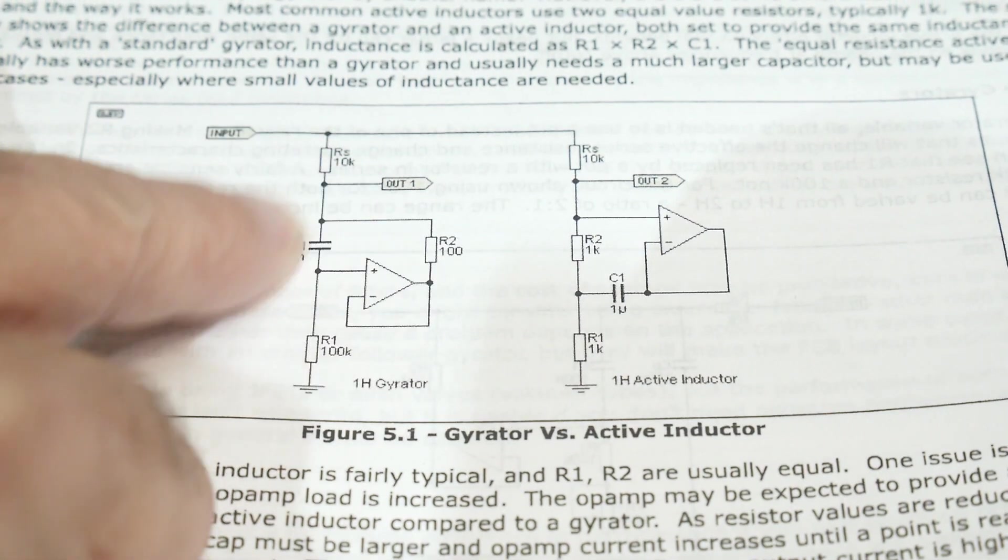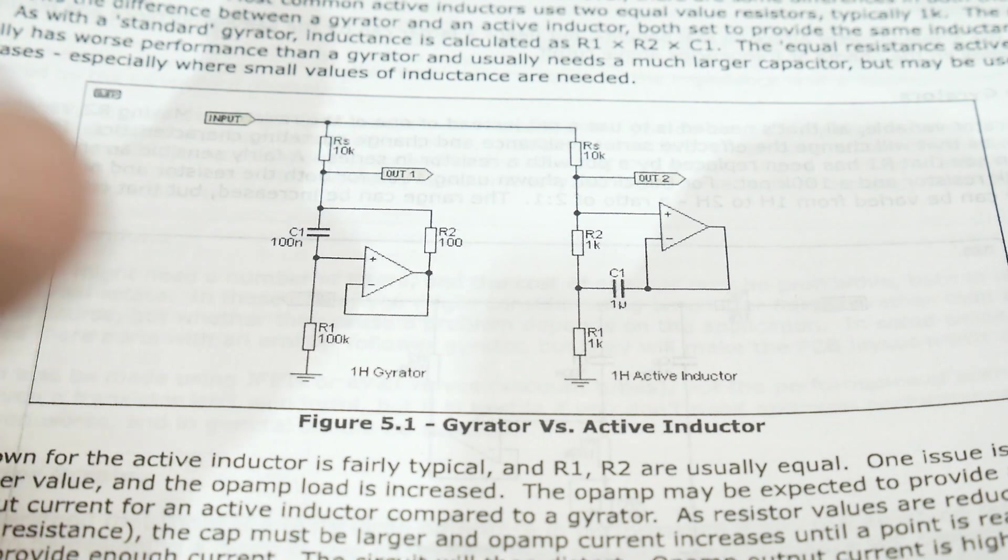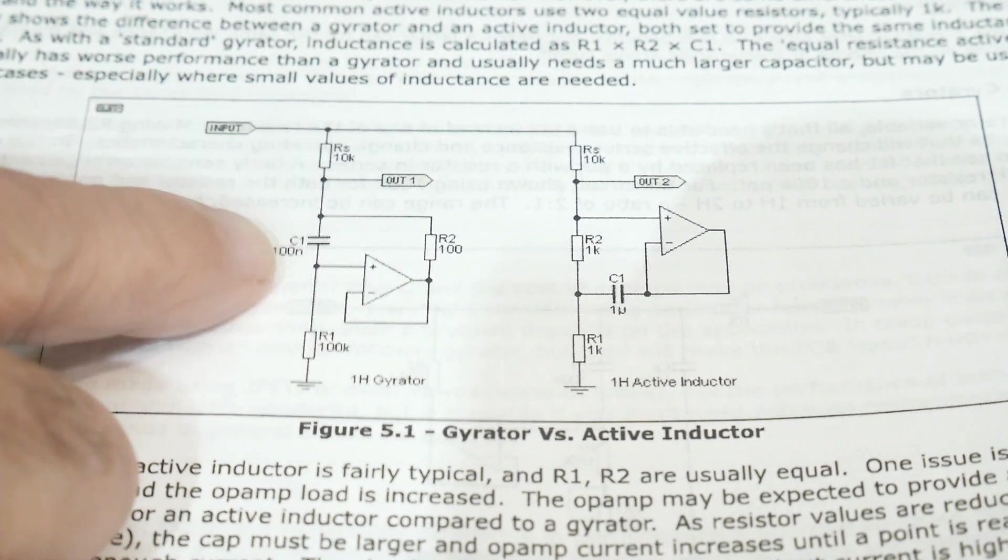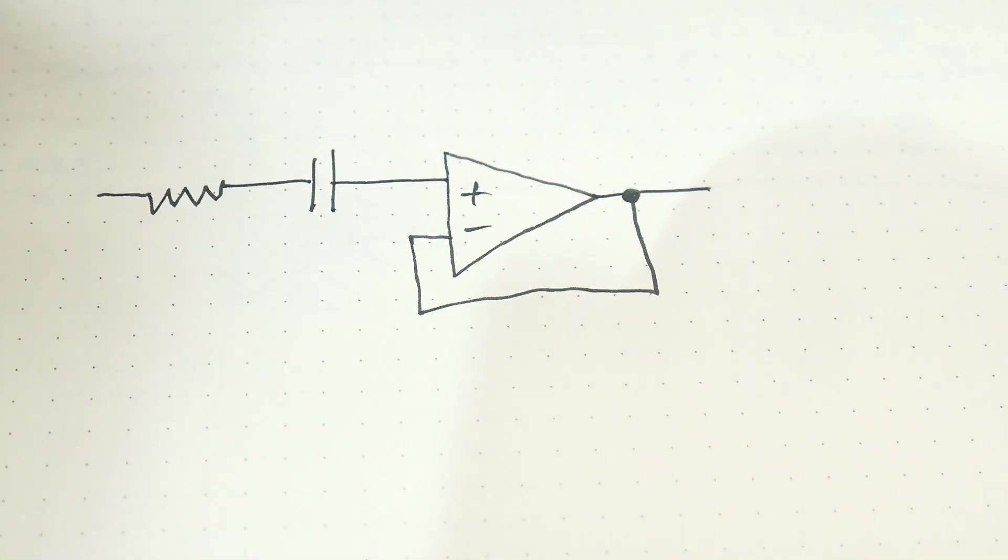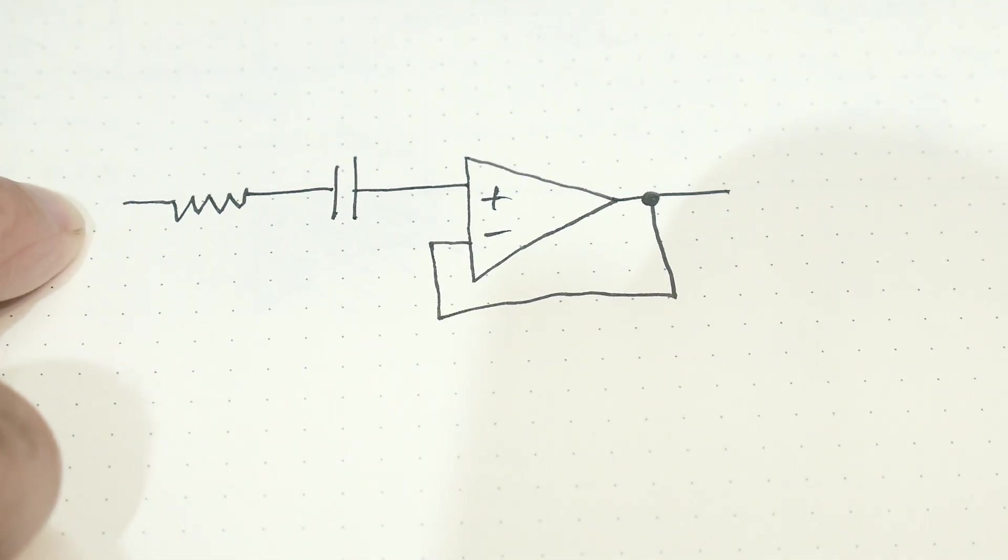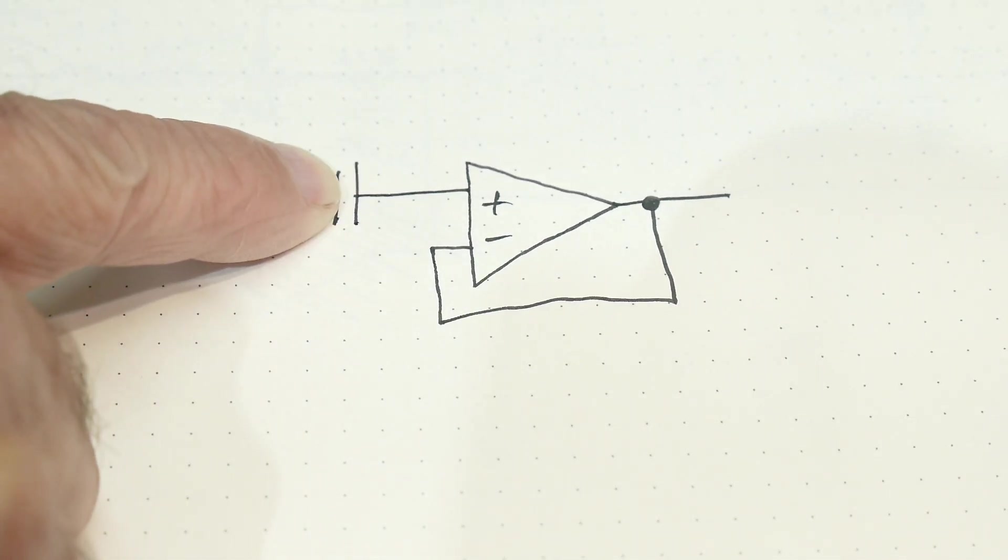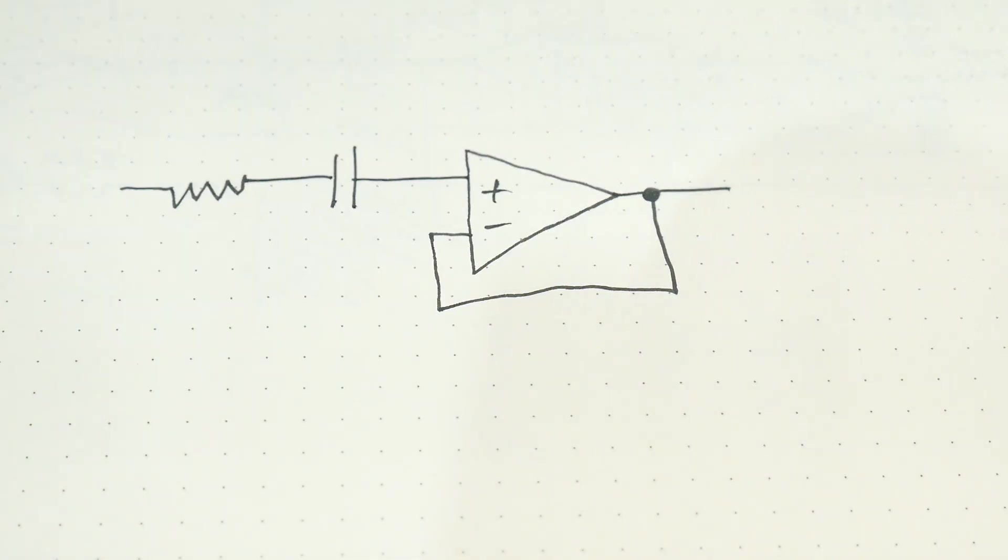So whenever I see a particular circuit and I try to figure it out, a lot of times it helps to redraw it. And so we are going to be taking a look at this circuit here. So it is just a signal coming in through a capacitor and we're going to buffer it. That's all that's going on here.